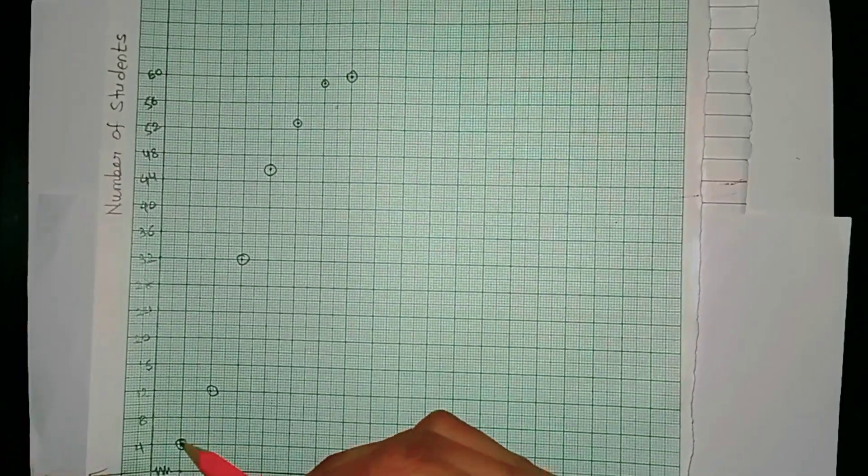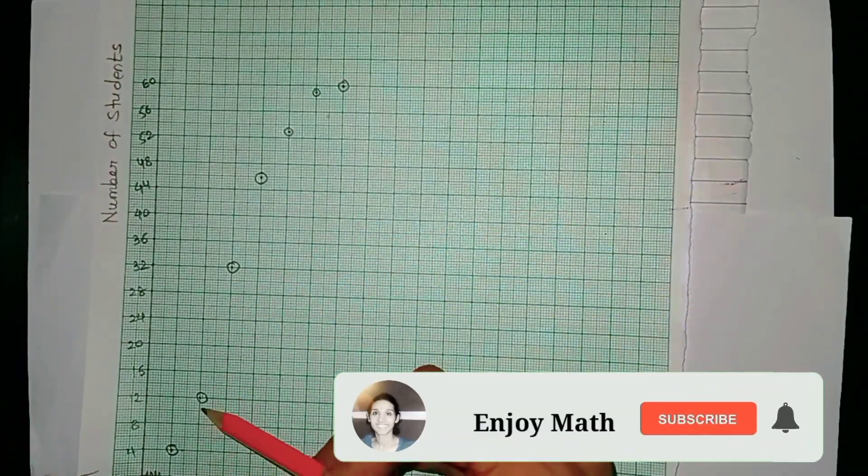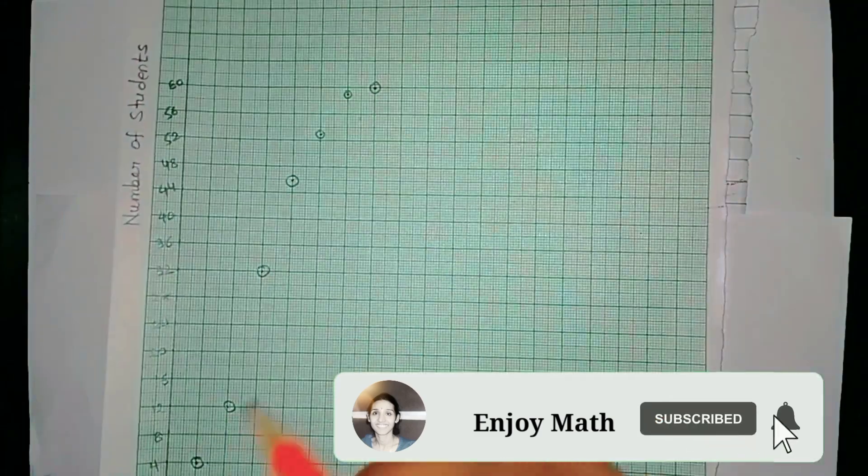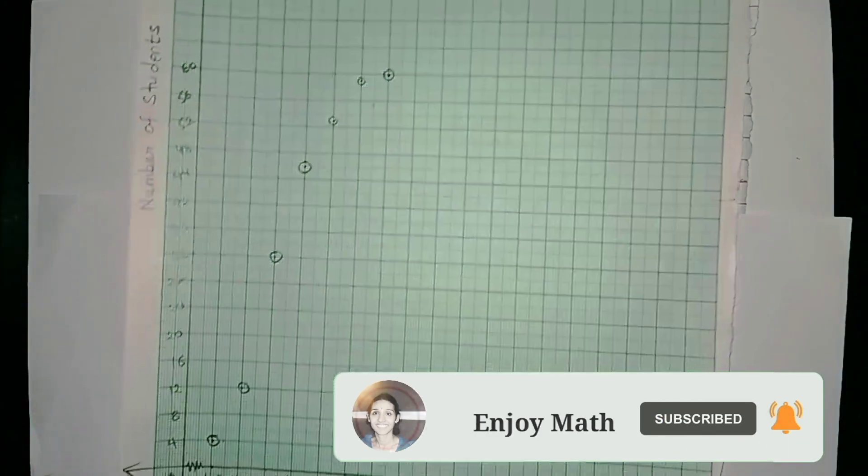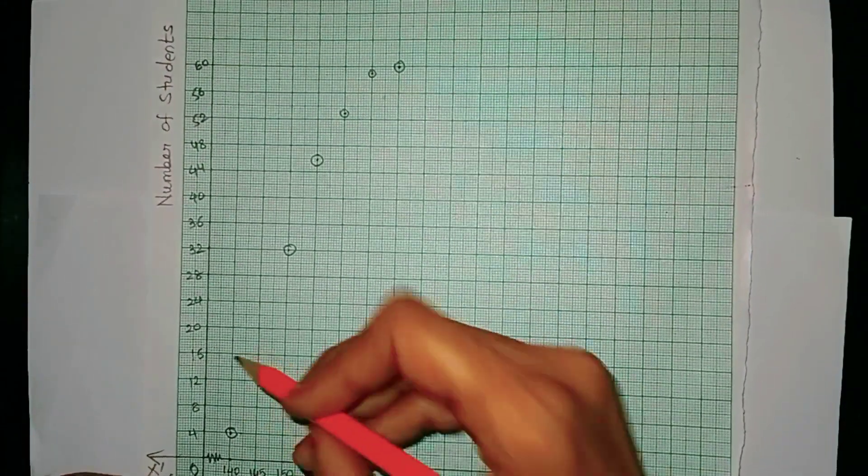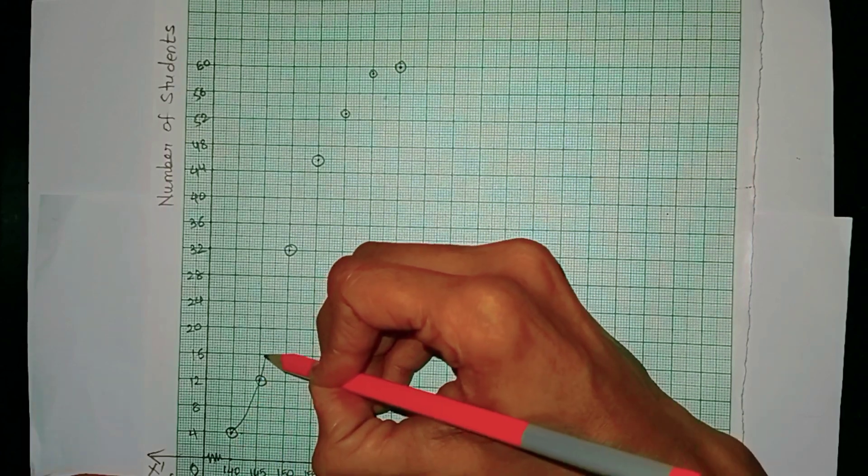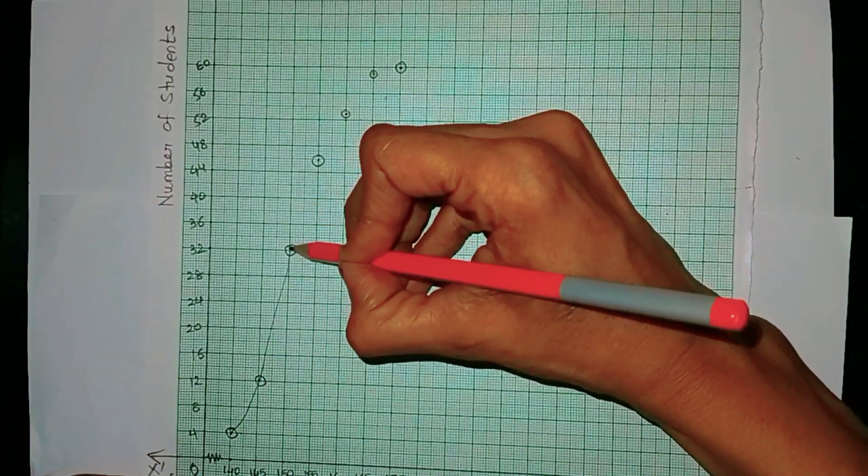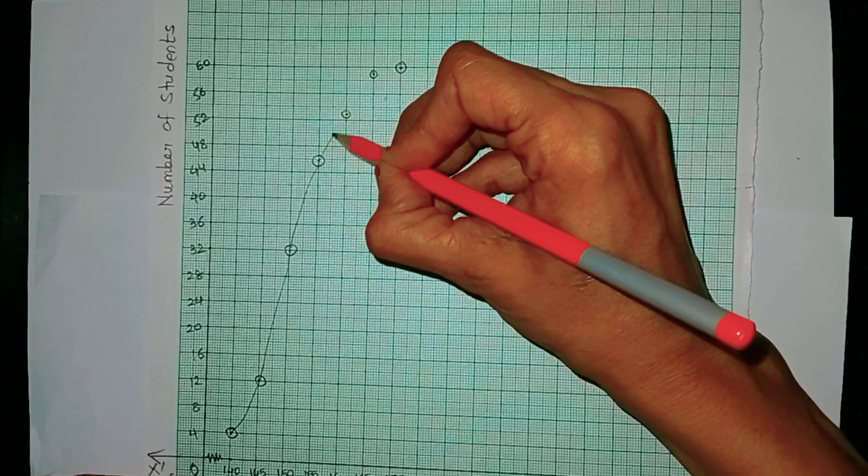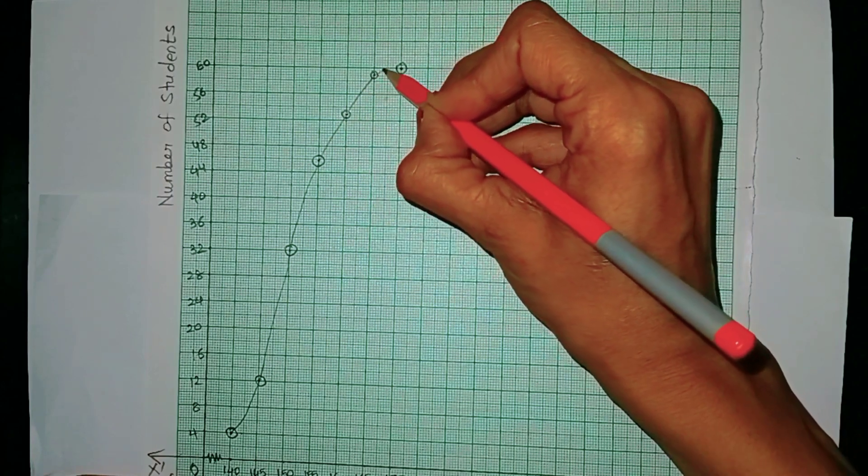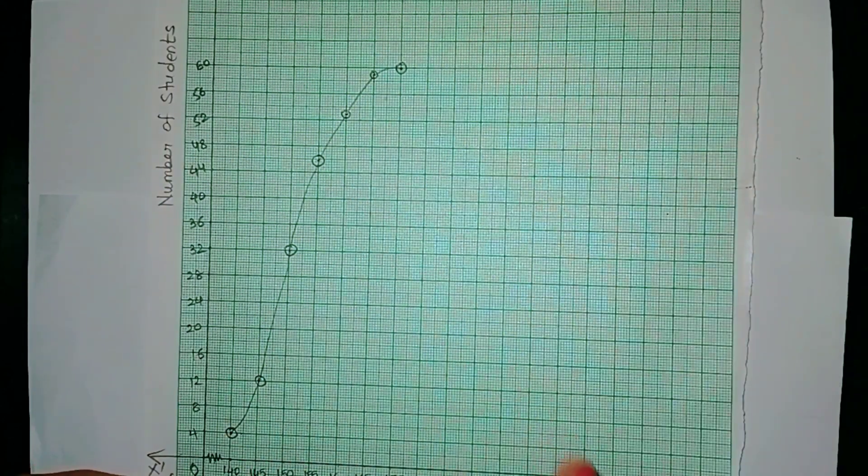So in this way, let me plot all the points. Here I have marked all the points: 145 to 12 and so on. Now we have to join all these points with a freehand smooth curve.